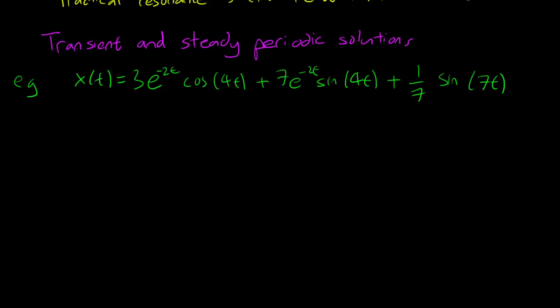Notice that for the ones with exponentials, if t becomes large, they disappear. So that's why we call these the transient solution. It's transient because it doesn't last very long. As t becomes large, it just goes away.